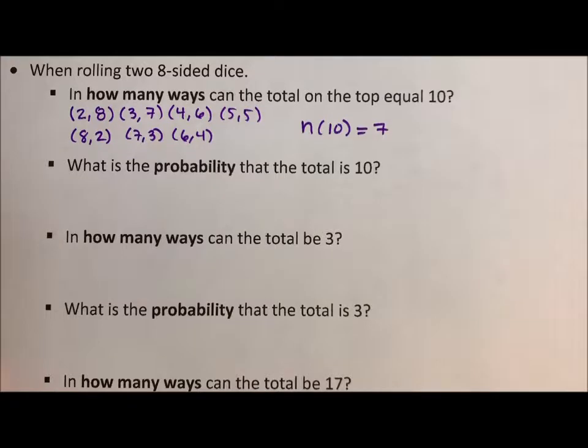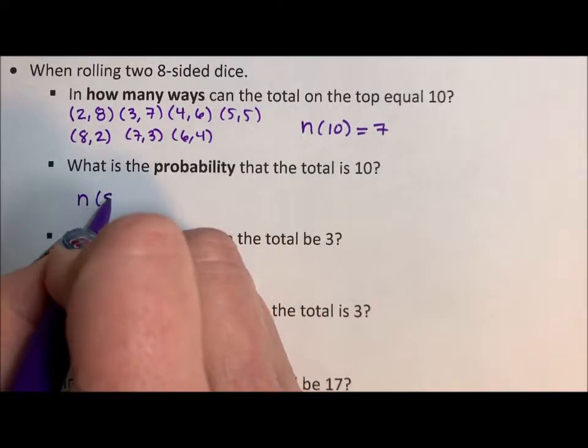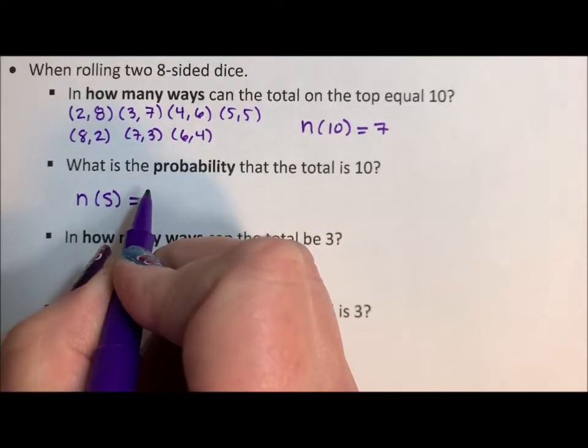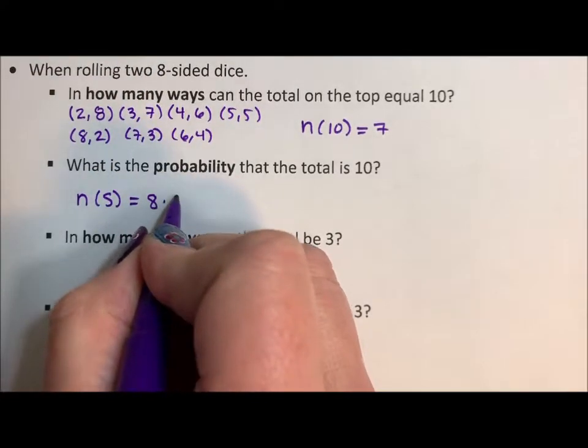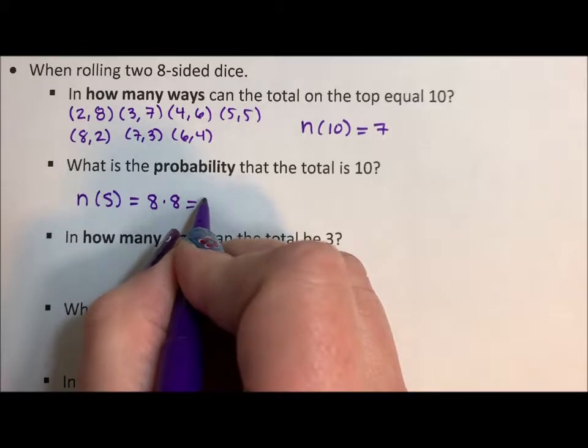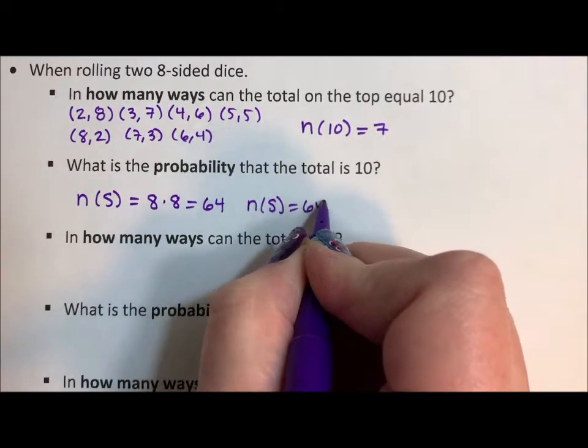What is the probability? To calculate probability, we need the total number of elements in the sample space. We have 8 options for the first die and 8 for the second, so 8 times 8 equals 64 elements in the sample space.